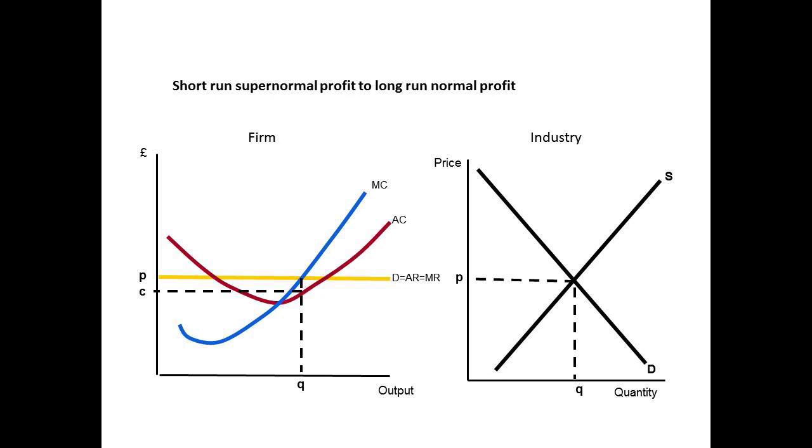What's going to happen, because we've assumed there are no barriers to entry, is new firms are going to join this market. They're going to enter because of the supernormal profits that are being made. Therefore, the overall level of supply in the industry increases, because there are now more firms making the same products. We'll show that by a shift to the right in supply in our industry diagram, giving us a new quantity Q1 and a new price P1.